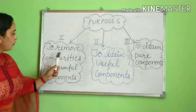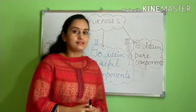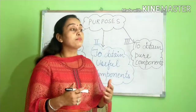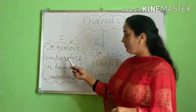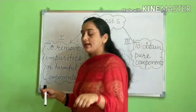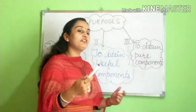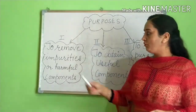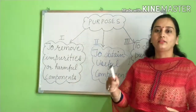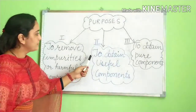Coming to the first purpose — to remove impurities or harmful components. For example, rice or pulses may contain small stones or some impurities, and we have to remove them to make the rice or pulses fit for our consumption. Similarly, river water is purified before supplying to homes so that impurities are removed to make the drinking water fit for drinking.